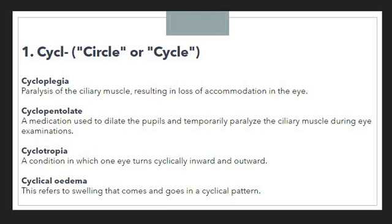The first example is cycloplegia. Cycloplegia means paralysis of the ciliary muscle — a circular muscle — resulting in a loss of accommodation in the eye. Next is cyclopentolate, a medication used to dilate the pupils and temporarily paralyze the ciliary muscle during an eye examination. Again, CYCL is used to denote the ciliary muscle.